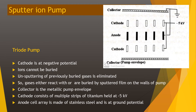Now we discuss the triode pump. The cathode is at negative potential. Ions cannot be buried unsputtered, so re-sputtering of previously buried gases is eliminated. Gases either react with or are buried by the sputtered film on the pump walls. The collector is the metallic pump envelope. The cathode consists of multiple strips of titanium held at minus 5 kilovolts. The anode array is made of stainless steel and is at ground potential. The collector pump envelope is metallic in nature.